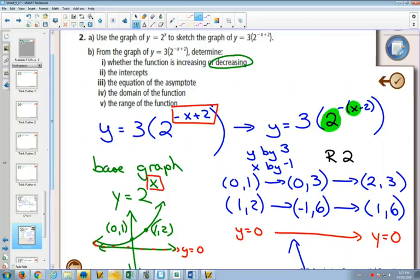we find a y-intercept by plugging in 0 for x. If I plug in 0 for x, I'm going to get 3, 2 to the power 2, which will be 2 squared is 4 times 3 is 12. So your y-intercept will be at 12.